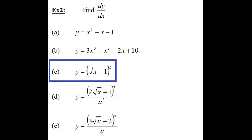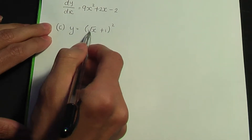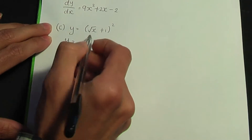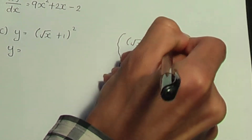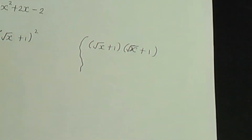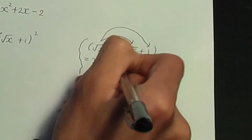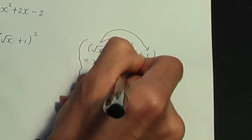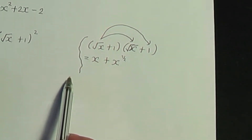Part C is to differentiate y is equal to root x plus 1 to the power 2. Before we differentiate, we need to expand this bracket. So back to paper and pen. If I expand, multiplying root x plus 1 by another root x plus 1: root x times root x is x; root x times 1 is root x, or x to the power half. Write your terms in the form ax to the power n, so you'll be ready to differentiate in the next step.